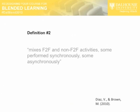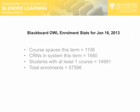Just to show that, looking at this as a definition of blended learning, we are actually quite engaged here at DAL already. These are some of the latest stats from Blackboard from last week. There are over 1,100 course spaces on Blackboard this term, and over 1,600 CRNs in the system. Almost 15,000 students have at least one class in Blackboard — probably close to 90% coverage at the university.